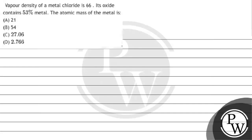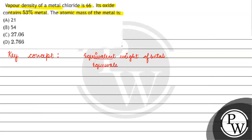Hello, let's read this question. The question says vapor density of a metal chloride is 66. Its oxide contains 53% metal. The atomic mass of the metal is: option A 21, option B 54, option C 27.06, option D 22.766. The key concept for this question is equivalent weight of metal divided by equivalent weight of oxygen.